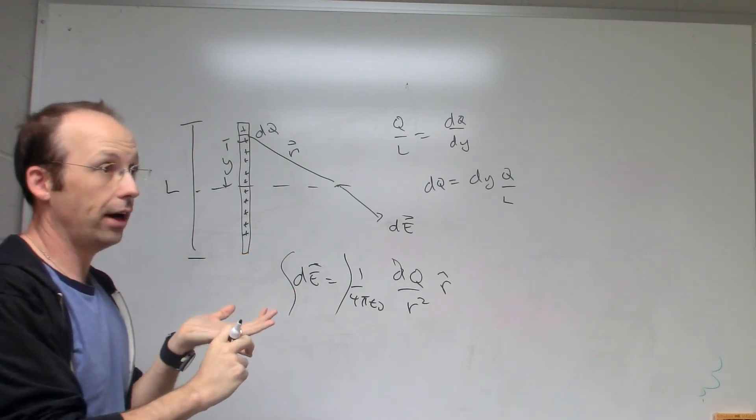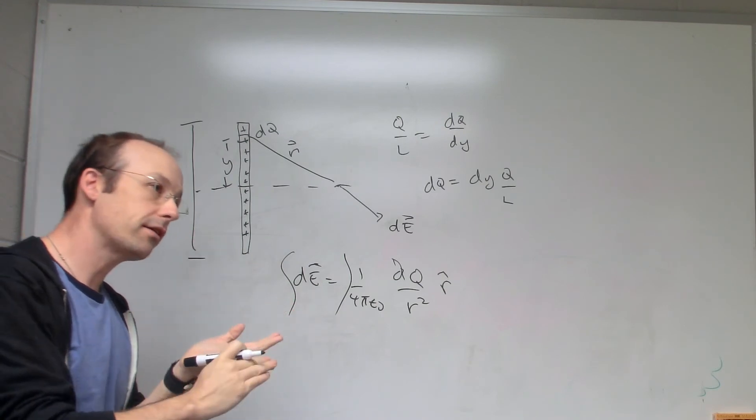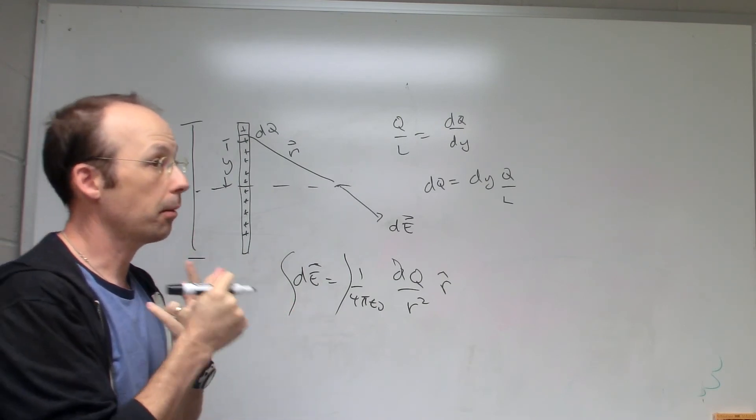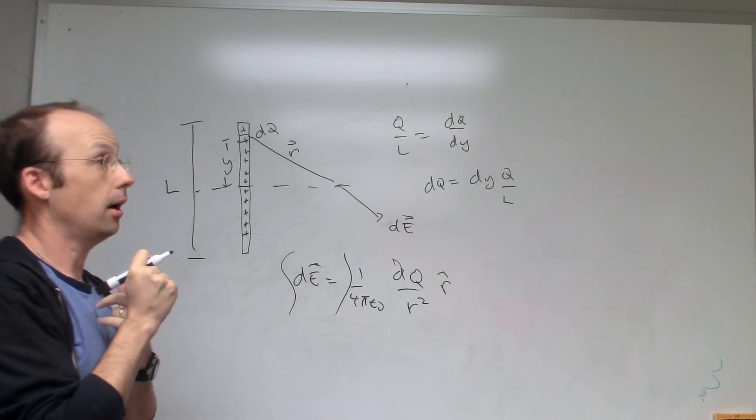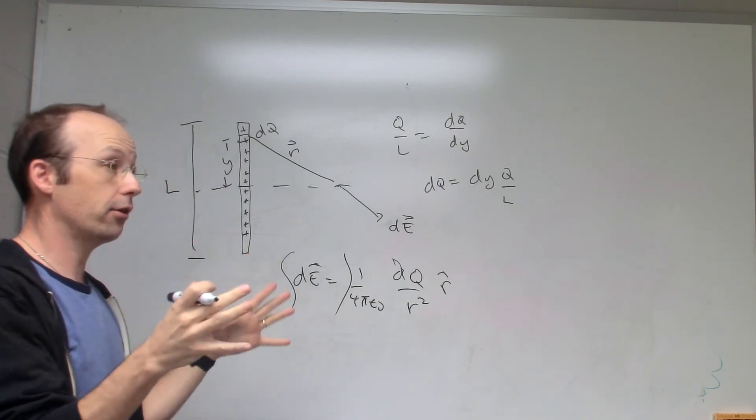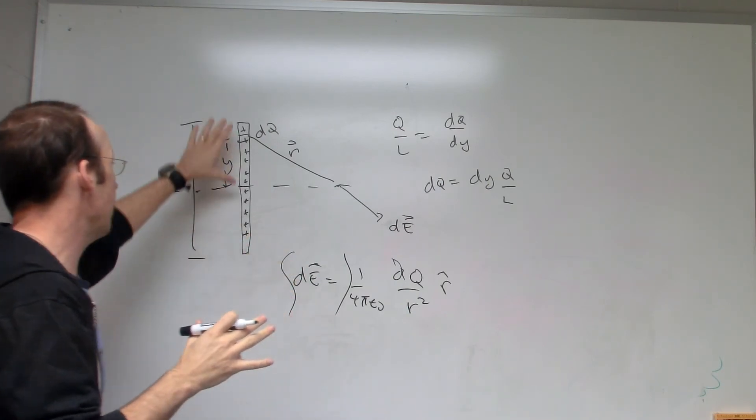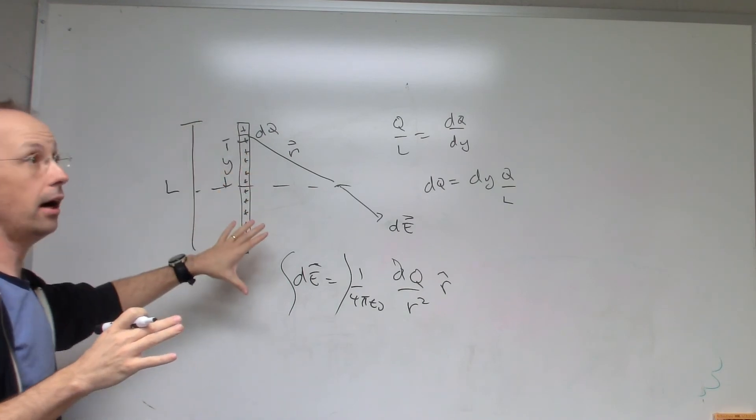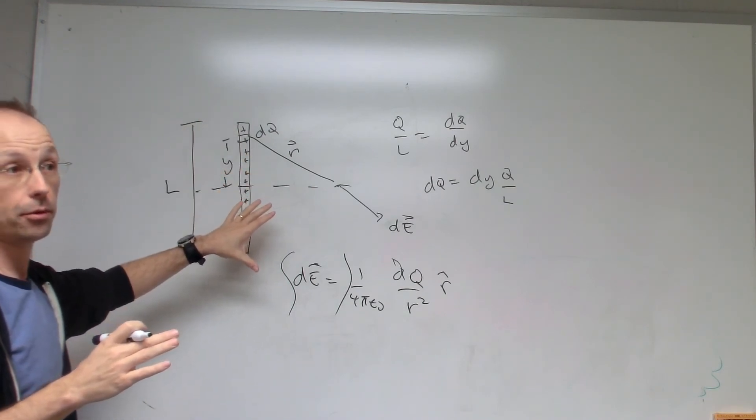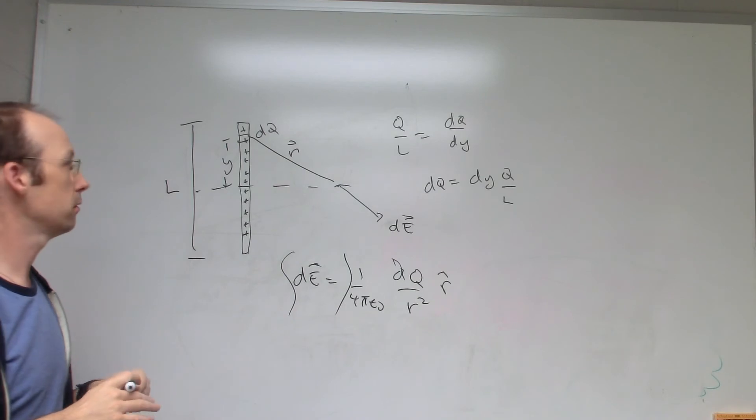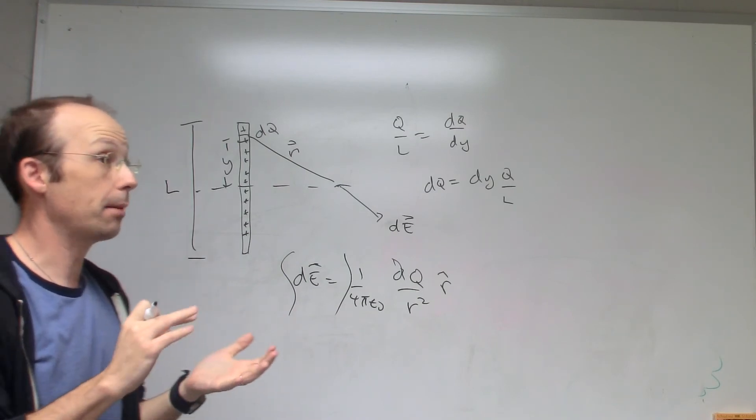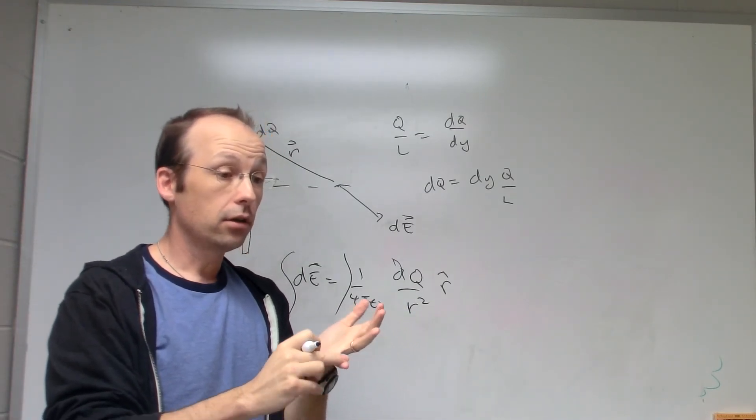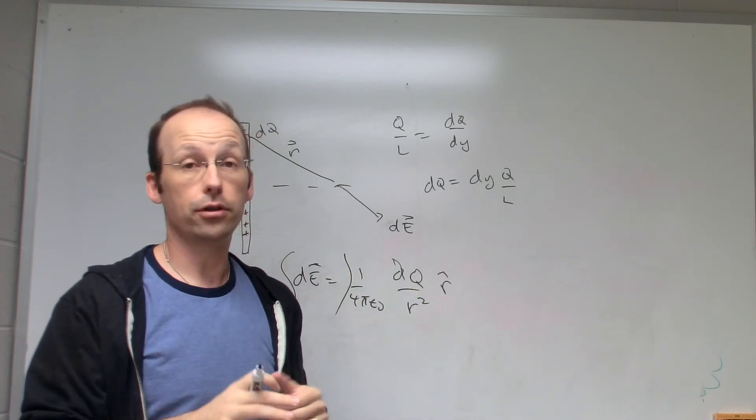After we did a ring of charge, we did a plate of charge, we did a capacitor, we did a sphere of charge. All those things you should understand how to derive them. Maybe I'll ask, what if this was a non-uniform charge distribution, how would you do that? That's a good question. But that's all chapter 16 is about, is finding the electric field due to charge distributions, not point charges.